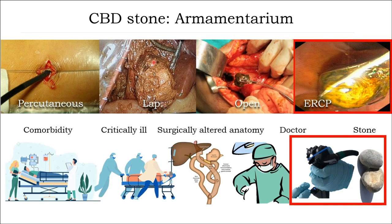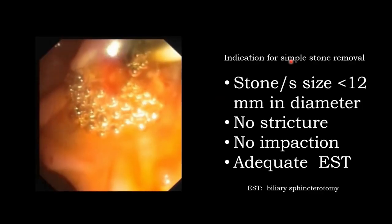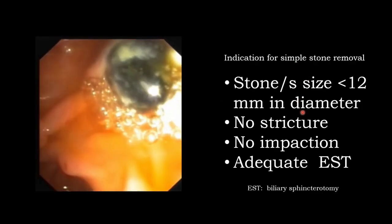There are many therapeutic options to remove CBD stone depending on co-morbidity, clinically ill patients, post-surgical anatomy, local expertise, and stone location. EASP is the most prevalent if technically possible. If stone is less than 12 mm in diameter, no stricture, no impaction, and adequate sphincterotomy, you can remove the stone easily — this is simple stone removal.